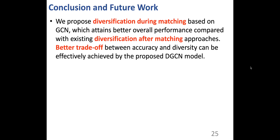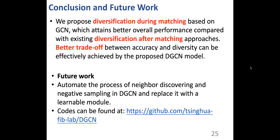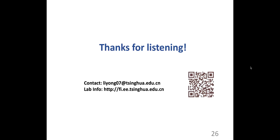To summarize, we propose diversification during matching based on DGCN, which attains better overall performance compared with existing diversification after matching approaches. We show that better trade-off between accuracy and diversity can be effectively achieved by the proposed DGCN model. For future work, we believe it is promising to automate the process of neighbor discovering and negative sampling in DGCN and replace it with a learnable model. Codes can be found at the provided link. Thanks for listening, and here is some contact information for our lab.